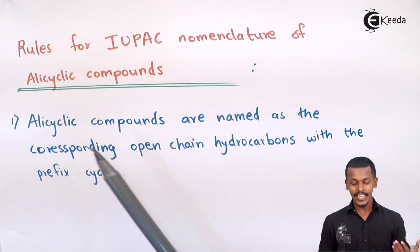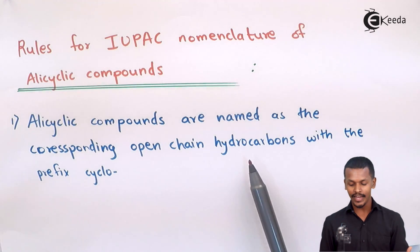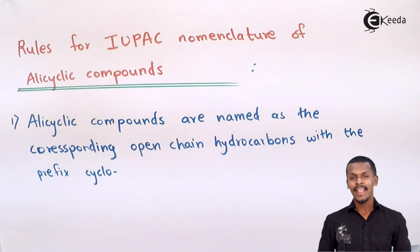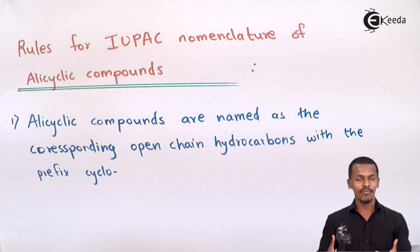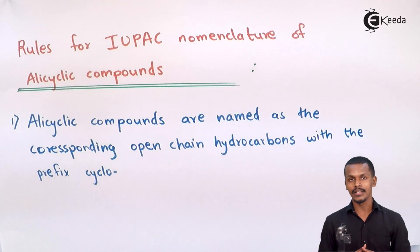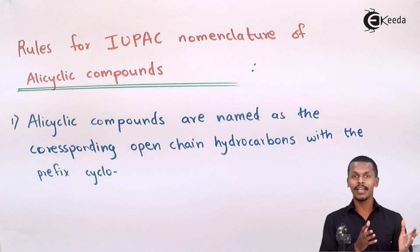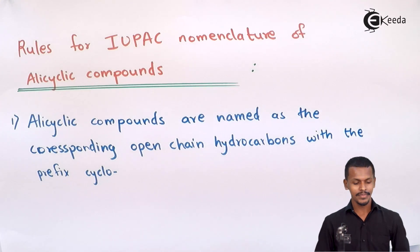The first rule: alicyclic compounds are named as the corresponding open-chain hydrocarbons with the prefix 'cyclo'. The rules are maintained the same as for aliphatic or open-chain hydrocarbons; the only difference is the addition of the prefix 'cyclo'.